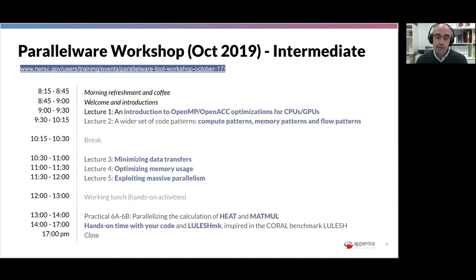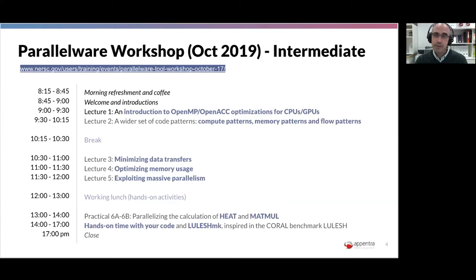The third topic was how to exploit massive parallelism. In multicore CPUs we typically deal with 10, 20, or 30 cores, but when you go to the GPU, you have to think in a higher dimension — how to span your code across thousands of threads. These were the three main topics of the intermediate level course, and again based on the concept of pattern. We distinguish three types of patterns: compute patterns, memory patterns, and flow patterns.